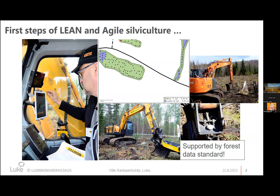There is also an opportunity to use the information from silvicultural operations — soil preparation, planting, young stand management, etc. — to update the forest management planning systems. This is connected to coordinates which are getting more and more accurate; there is now RTK support for positioning. In the Finnish context, coordinates for soil preparation spots have been in the Finnish forest data standard since around 2016, and a second generation is already coming.